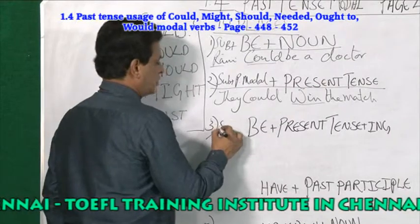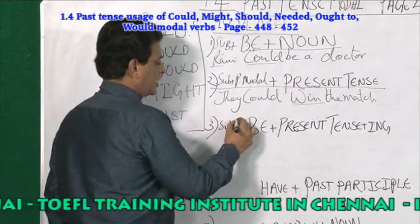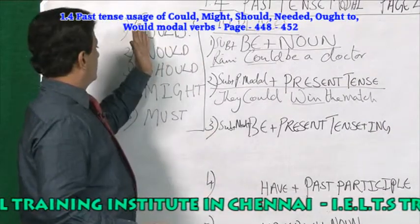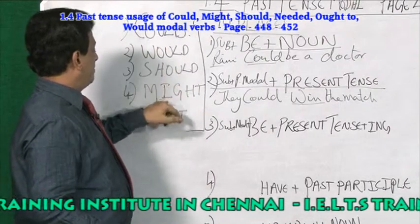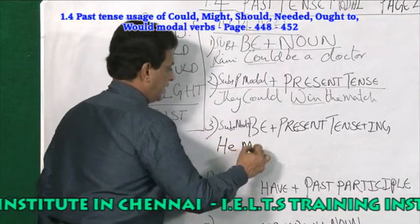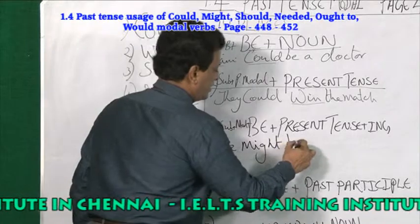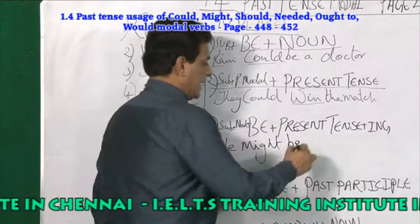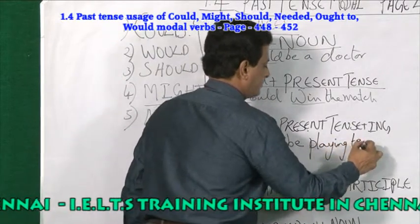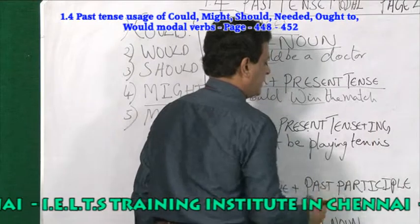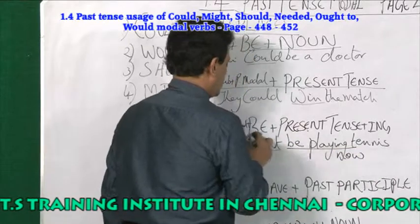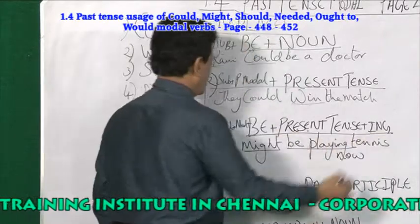Third place: you are using subject plus modal verb, then be plus present tense verb plus -ing. For example, take the modal verb 'might' with subject 'he': he might be playing tennis. He might be playing tennis now. So the structure is: past tense modal verb plus be plus verb plus -ing.